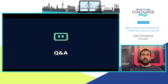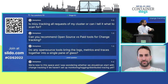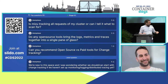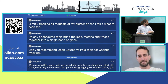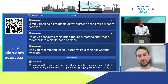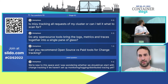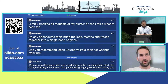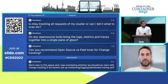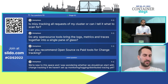Thank you, I really enjoyed talking with you today. Now for the Q&A. First question: Is Miso tracking all requests in my cluster, or can I tell it what to scan for? Great question — you can configure the relevant namespace or relevant pods to track. In the demonstration, I tracked only the default namespace, but you can choose any level of granularity.